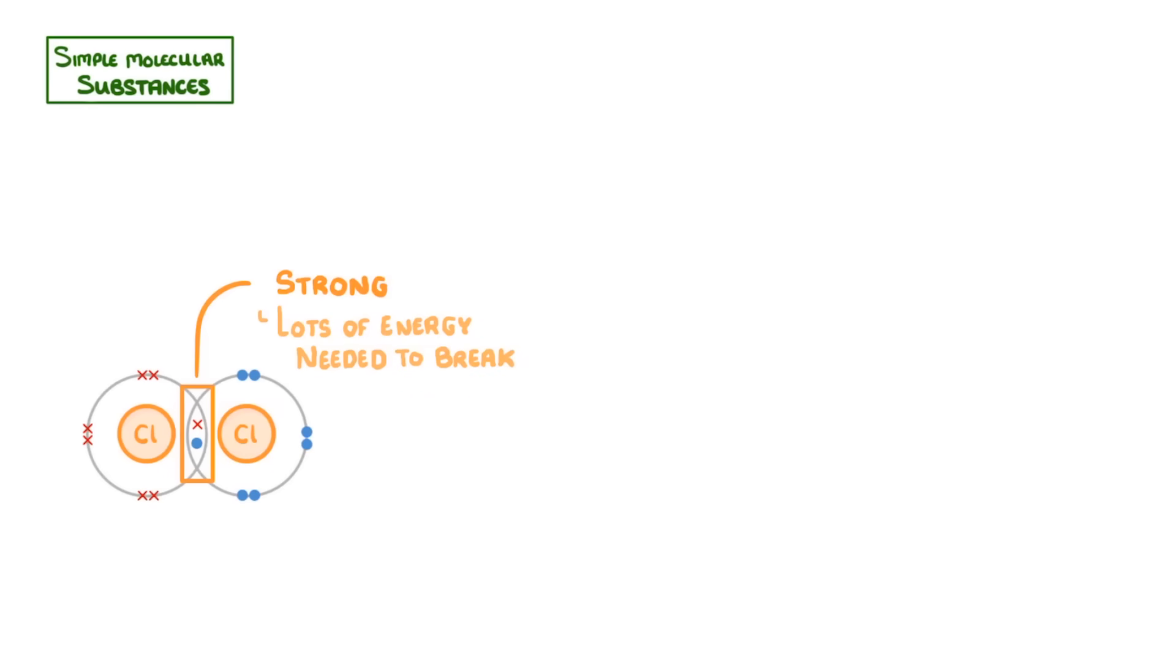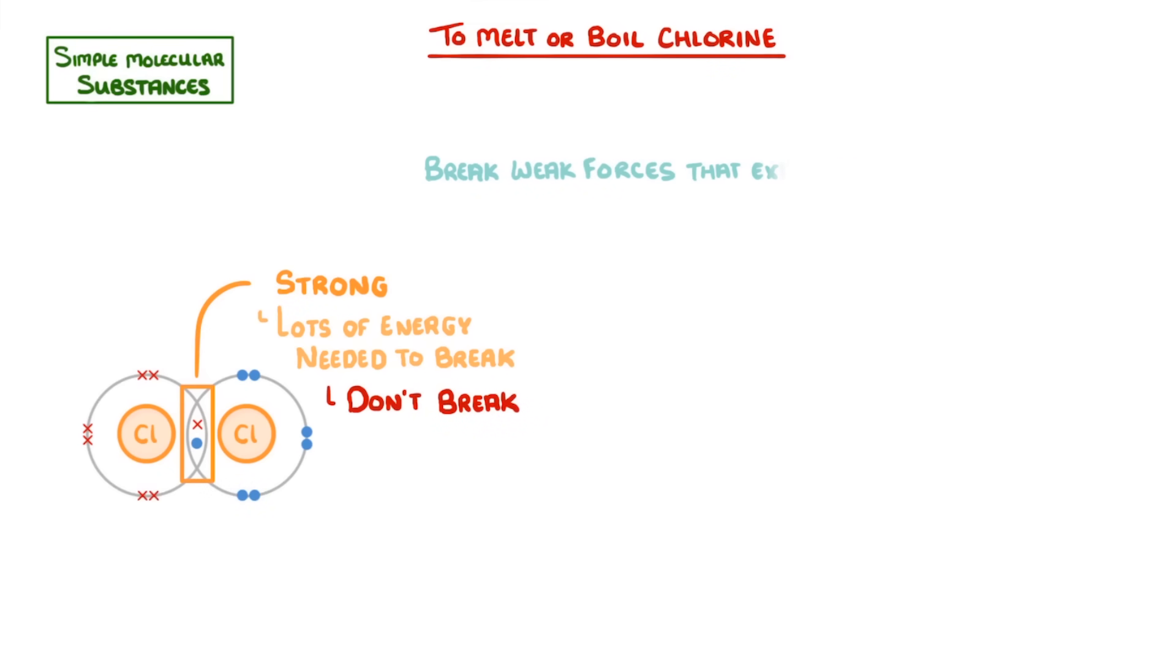So if we consider a simple molecular substance, like chlorine, the atoms within each molecule will be strongly bonded together. However, in order to melt or boil chlorine, we actually don't break these strong covalent bonds. Instead, we only need to break the weak forces that exist between different molecules, which we call intermolecular forces.